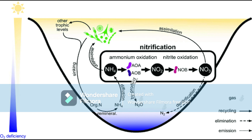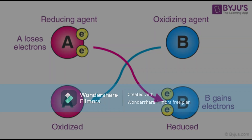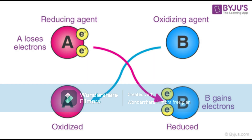Oxidization allows nitrifying and denitrifying bacteria to consume energy from their food sources. What happens is an oxidizing agent like oxygen or nitrogen attracts electrons from a chemical compound — the reducing agent — to form a new chemical compound. This process releases energy stored in the reducing agent, which the bacteria then consumes.